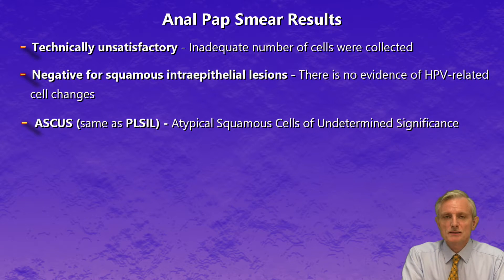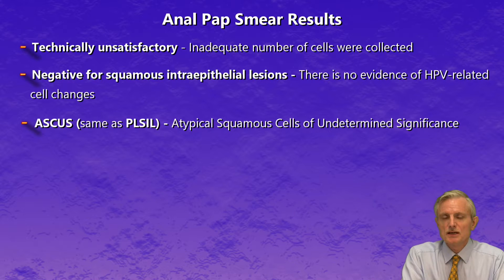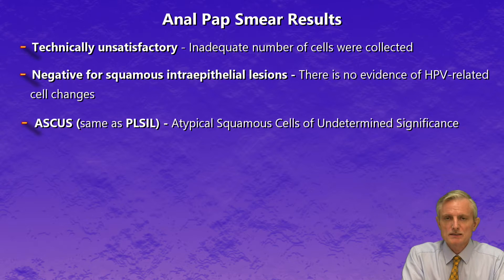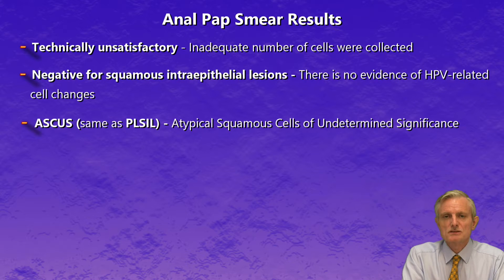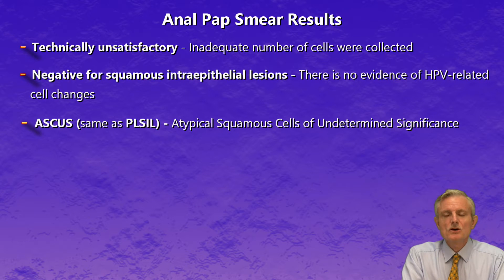ASCUS: the term ASCUS stands for atypical squamous cells of undetermined significance. In essence, the laboratory has identified some abnormalities but does not have sufficient information to categorize the pap smear as either abnormal or normal. This result is commonly associated with mild HPV virus infections.